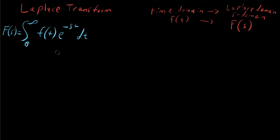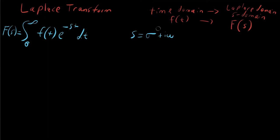You might ask: what on earth is S? S is technically called the complex frequency. It's written as the real component sigma plus i omega — so it's a complex frequency. The exact details aren't immediately necessary to understand, but keep it in the back of your mind because it will become more important as things move forward.